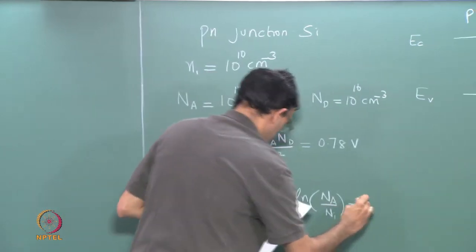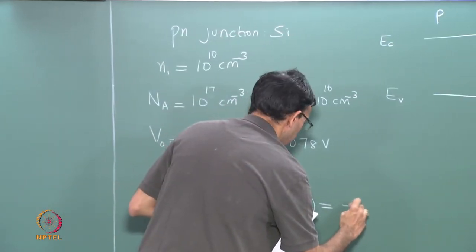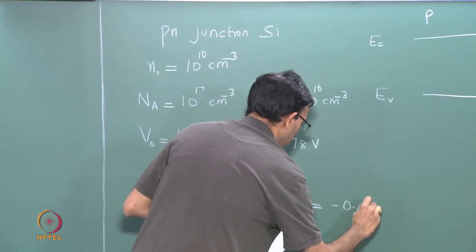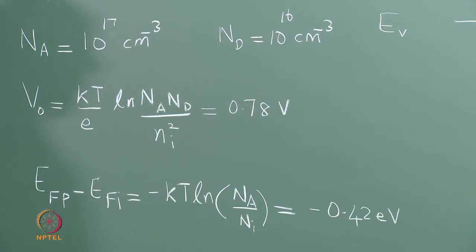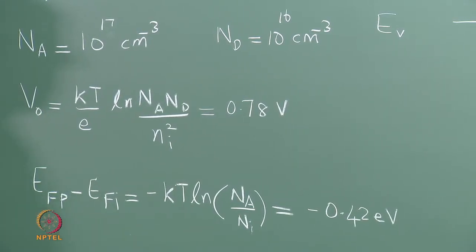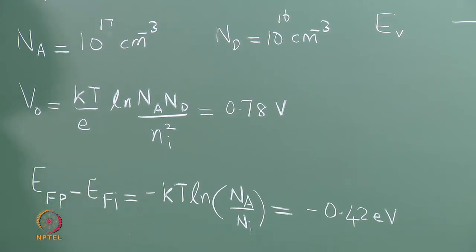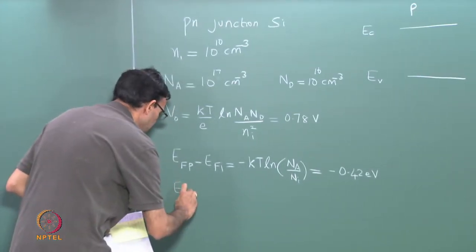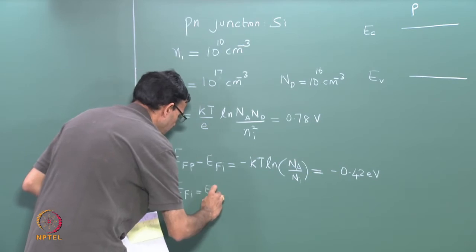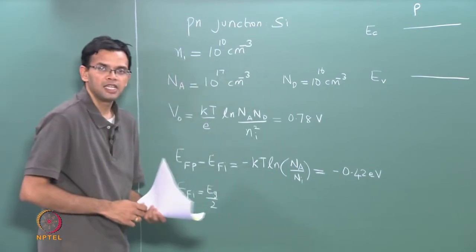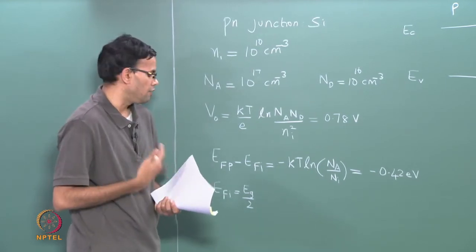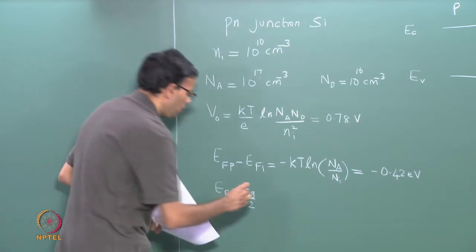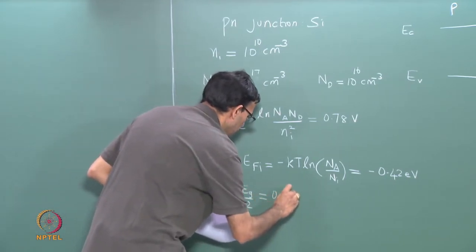If you do the numbers, this is equal to minus 0.42 electron volts. So in the case of a p-type, the Fermi level is located 0.42 electron volts below the intrinsic Fermi level. For simplicity, I will take the intrinsic Fermi level to be exactly at the band gap. In the case of silicon this is not entirely true — it will be slightly shifted because the effective masses are not the same — but for all practical purposes it is very close to the centre of the band gap.